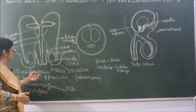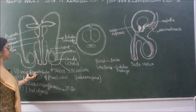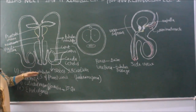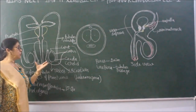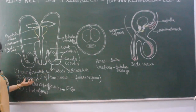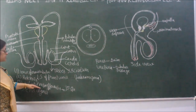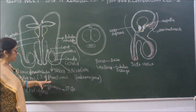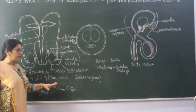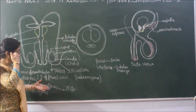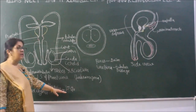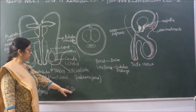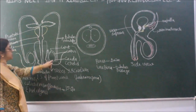In the testes, seminiferous tubules are present. Seminiferous tubules form tubuli recti, and tubuli recti form the rete testes. Rete testes then form the ciliated vasa efferentia. These vasa efferentia are ciliated tubular structures — there are 15 to 20 of them — and they all move towards the epididymis.